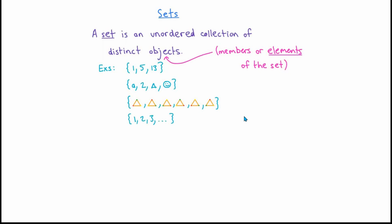Another familiar example is the set of positive integers, also sometimes called the set of natural numbers. The three dots here indicate that some hopefully obvious pattern continues. In this case, our human brain knows that the pattern is just increasing each of the numbers by 1 as you go to the right. One common notation for this set is to write a blackboard-style Z with a plus sign as a superscript. The blackboard-style Z is the notation for the set of all integers.